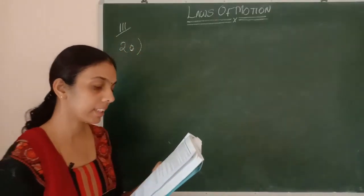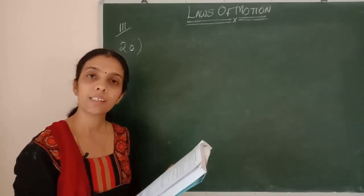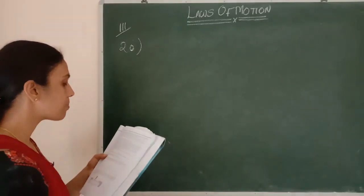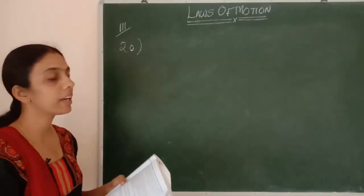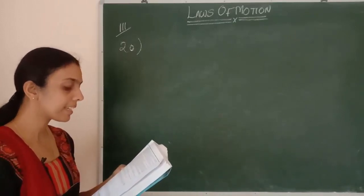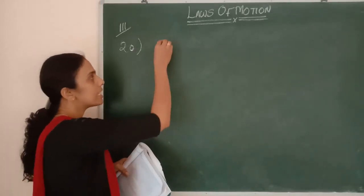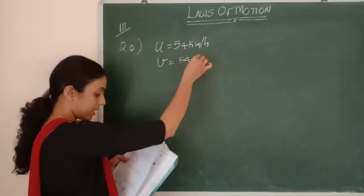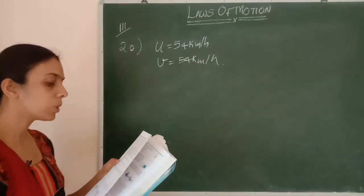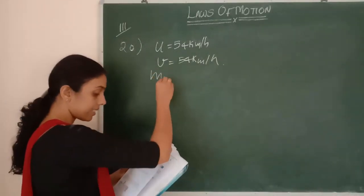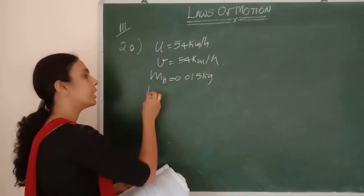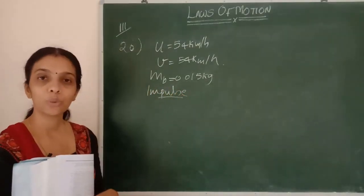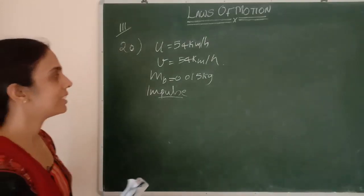Question 20: A batsman deflects a ball by an angle of 45 degrees without changing its initial speed of 54 km/h. Mass of the ball is 0.015 kg. We need to find the impulse imparted. Converting speed: 54 km/h × (5/18) = 15 m/s. One might think impulse = mv − mu, but the ball makes an angle of 45°, so we must use vectors.